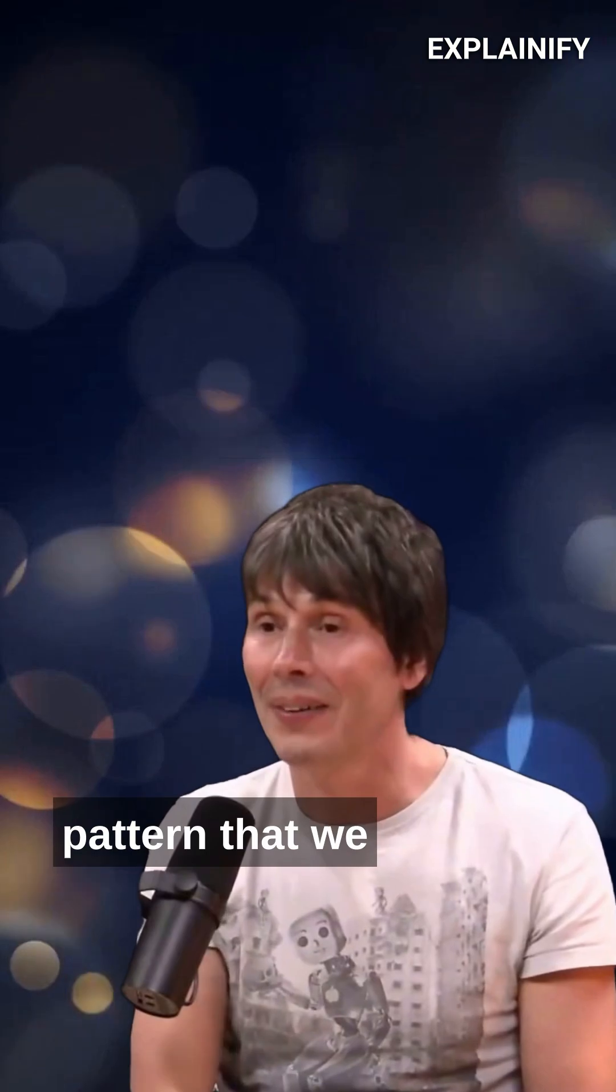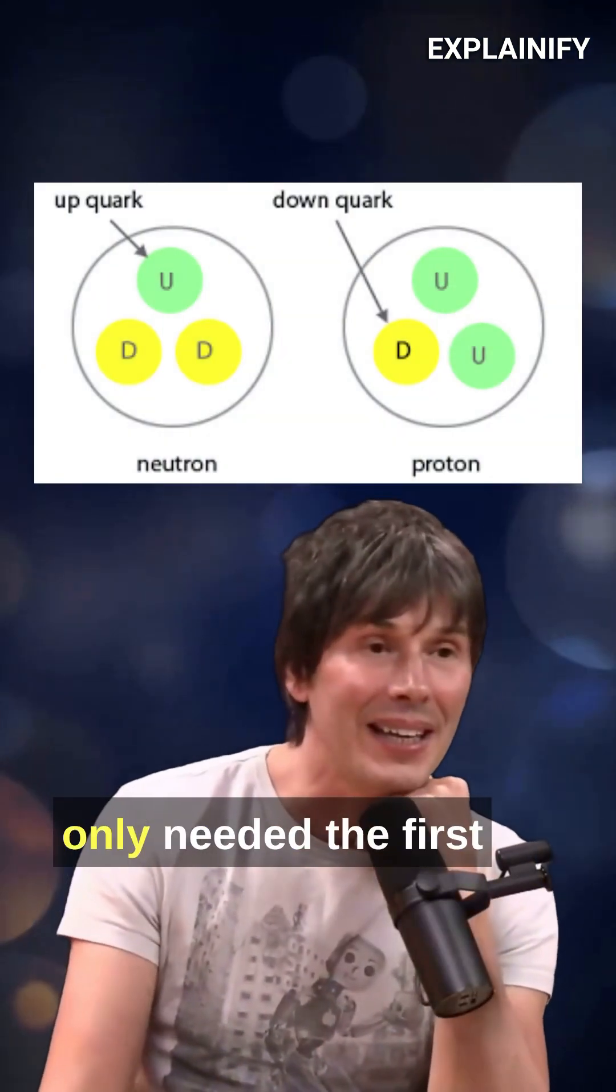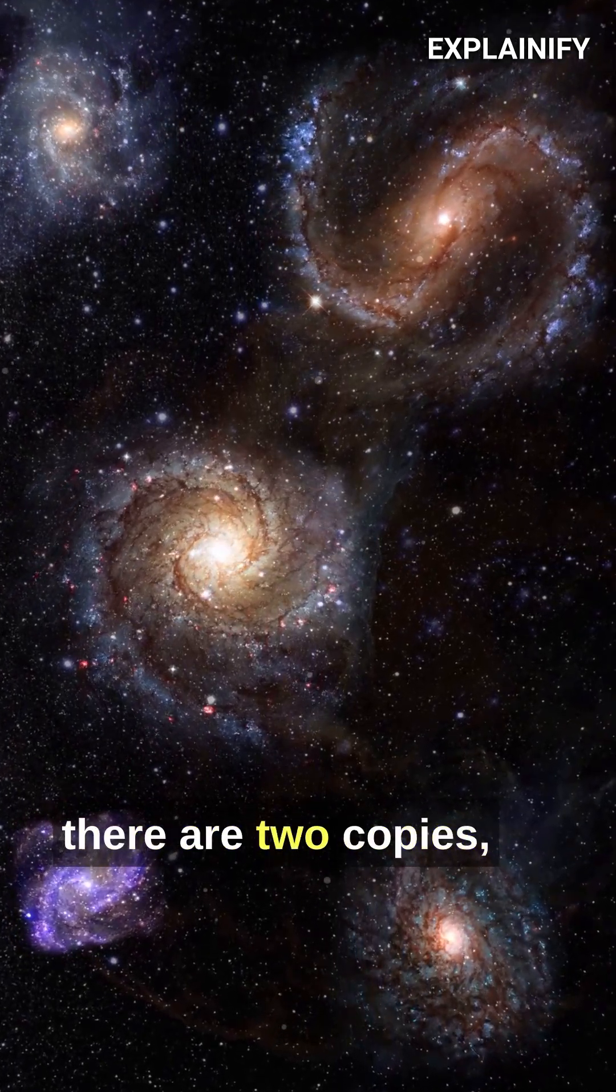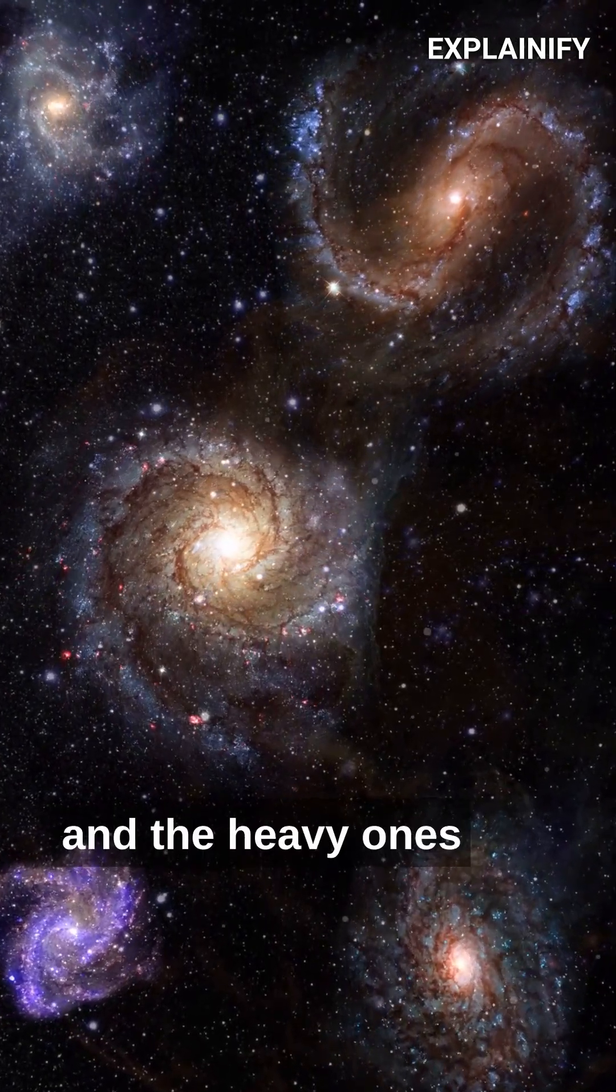There's this weird pattern that we don't understand. It seems like you only needed the first family to build a universe, right? But for some reason there are two copies, and the heavy ones decay into the lighter ones.